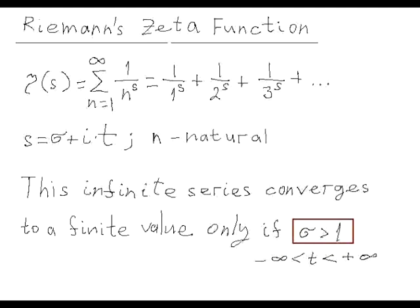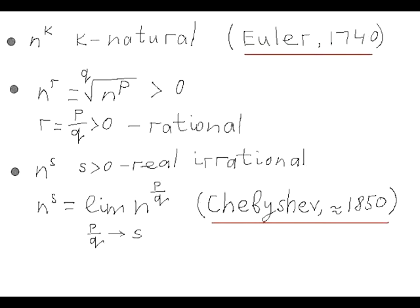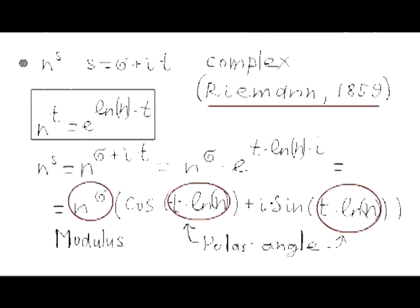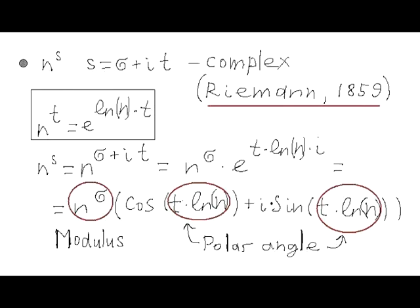However, if S is any real number greater than 1, then this series converges to a finite number — a well-known fact. Let's briefly review the history of studying this function. First, Euler studied it in the 18th century with argument S being a natural exponent k, achieving famous and wonderful results we will see later. Then in the 19th century, Chebyshev expanded the definition to S being real numbers. The power with a real irrational exponent is defined as the limit of a sequence of powers with rational exponents. Then Riemann, in 1859, expanded the definition to S being a complex number.